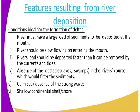The conditions necessary for the formation of a delta are: one, the river must have a large load of sediments to be deposited at the mouth; two, the river should be flowing slowly on entering the mouth; three, the river's load should be deposited faster than it can be removed by currents and tides; four, there must be an absence of obstacles such as lakes and storms in the river's course; five, there must be a calm sea or absence of strong waves; and six, a shallow continental shelf or shore.